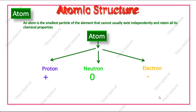The next point is, how do we represent these subparticles? Proton is represented as small p, neutron is represented as small n, and electron is represented as small e.